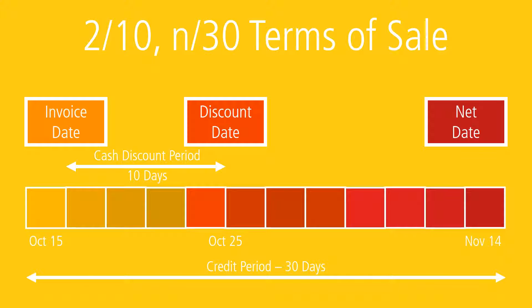Sometimes two cash discounts are offered, such as 3/15-1/25-N60. This means a 3% cash discount is offered if the invoice is paid within 15 days, a 1% cash discount if paid within 25 days, and the net amount is due in 60 days. Cash discounts cannot be taken on shipping charges or returned goods — only the net price of the merchandise. If shipping charges are included in the invoice amount, they must be subtracted before cash discounts are taken.